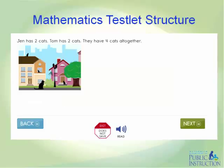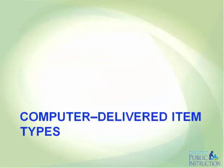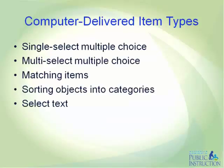In mathematics, the engagement activity provides a context and activates cognitive processes — for example, about putting things together — to prepare students for items about addition. There are a variety of item types students may encounter in computer-delivered testlets. While most DLM items are single-select multiple choice with text or images as answer choices, students may also see multiple-select multiple choice items with text or images, questions requiring them to match two lists, items requiring them to sort objects into categories, and text selection items. The student practice activities contain one or more examples of each of these item types.